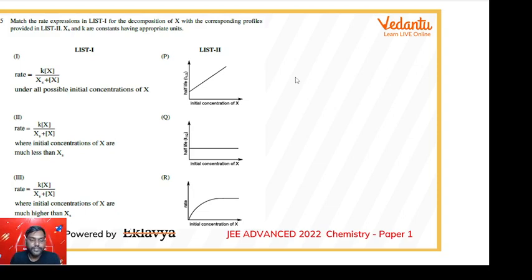Hi everyone, so this is question 15 in which List 1 has given us some rate expressions and List 2 has given some plots of different properties like half-life, rate, or variation of concentration with time. We have to match the rate laws with the properties or the plots given in List 2.